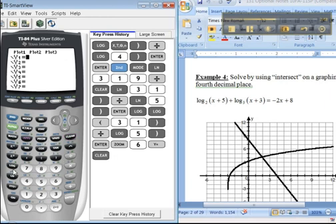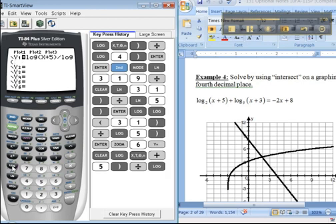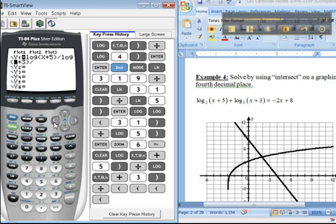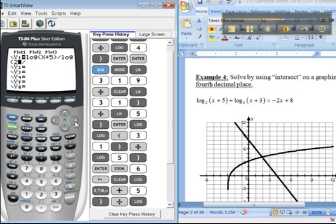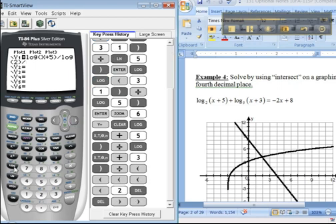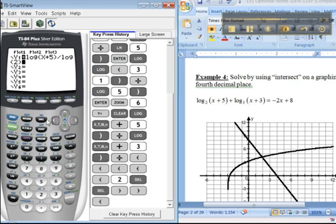Log, I'll do LOG. LOG, x plus 5, close parentheses, divided by log x plus 3, close parentheses, divided by, oh, log of 2. Sorry, I forgot about that. I'm getting ahead of myself there. 2, delete, delete. Okay. Then over here. Delete. Okay. That's the first one. I'm going to separate it like I did in that other tutorial.